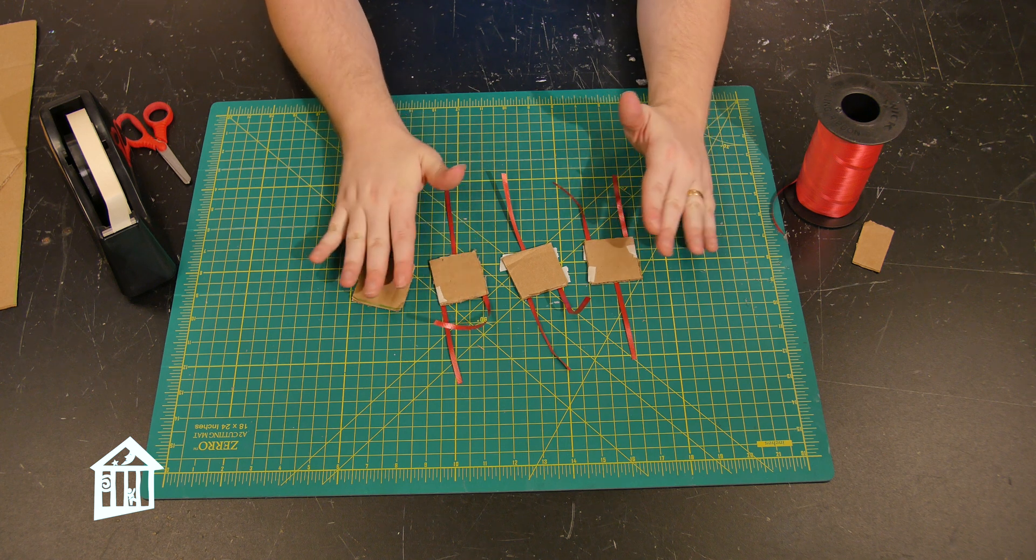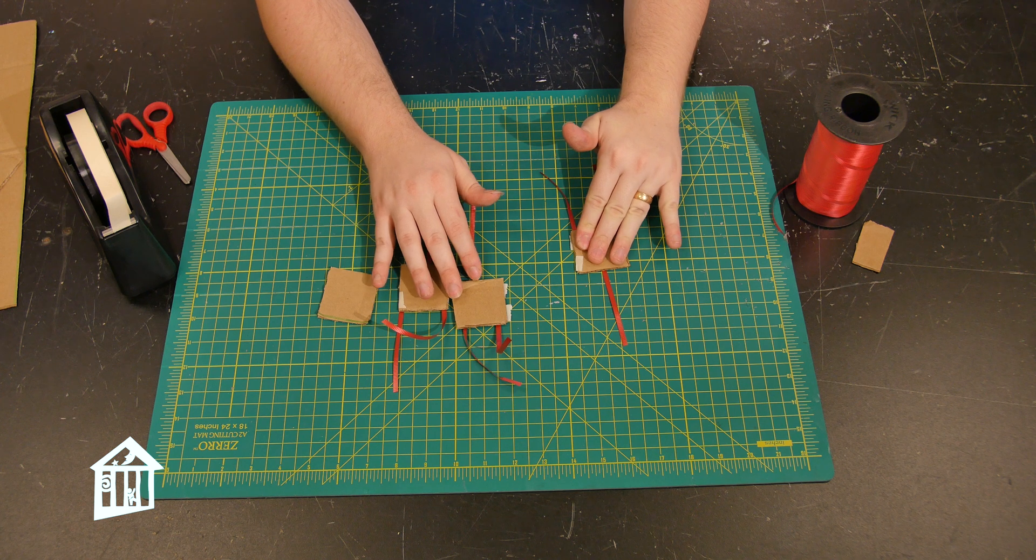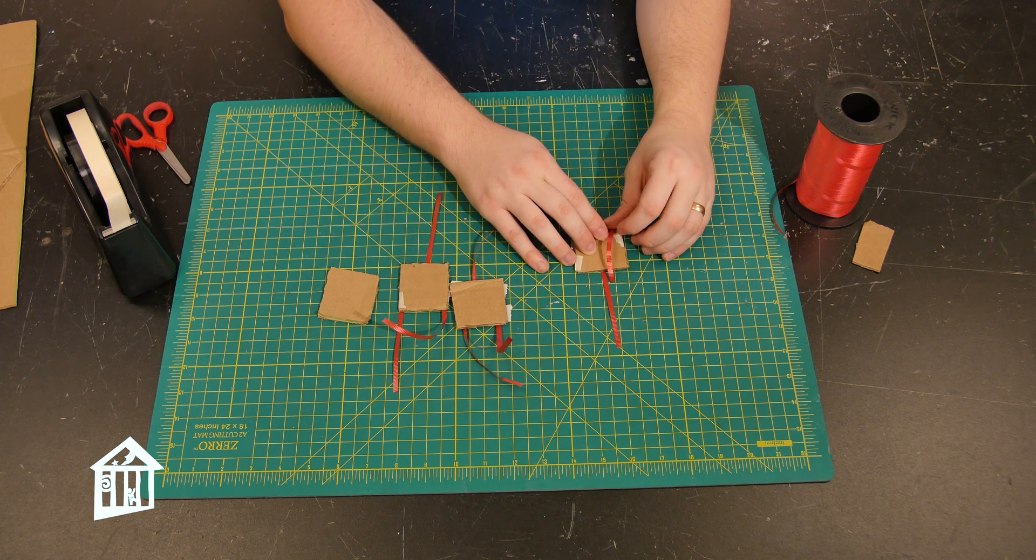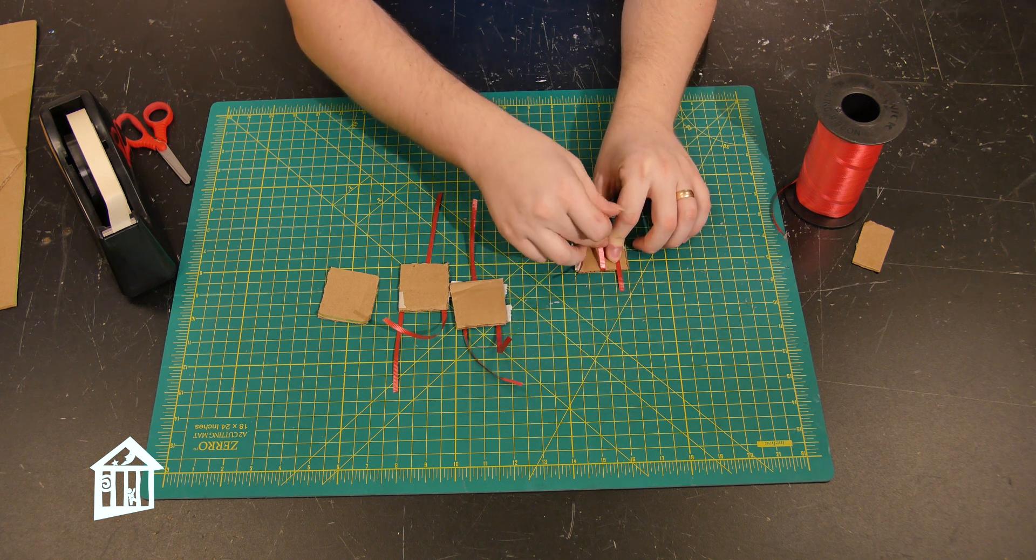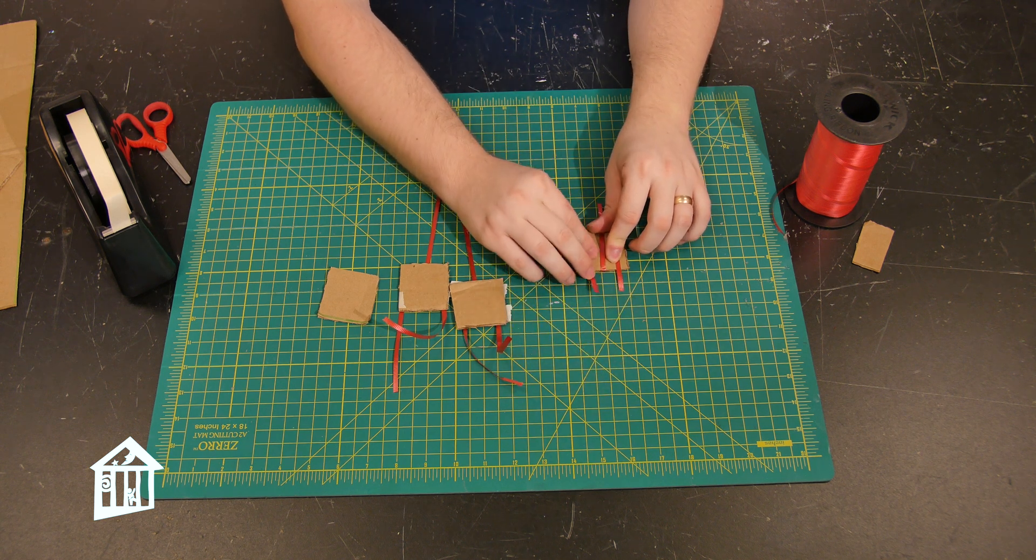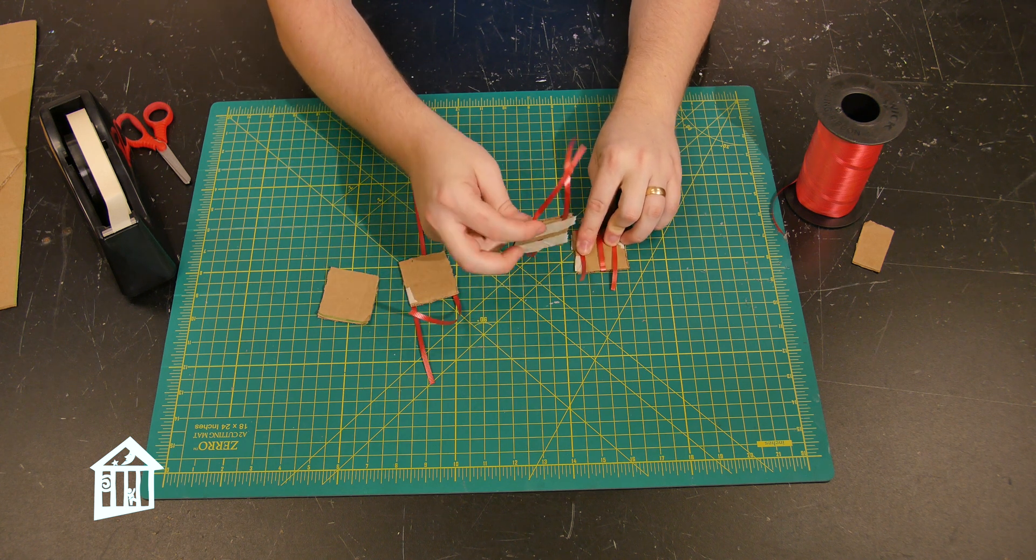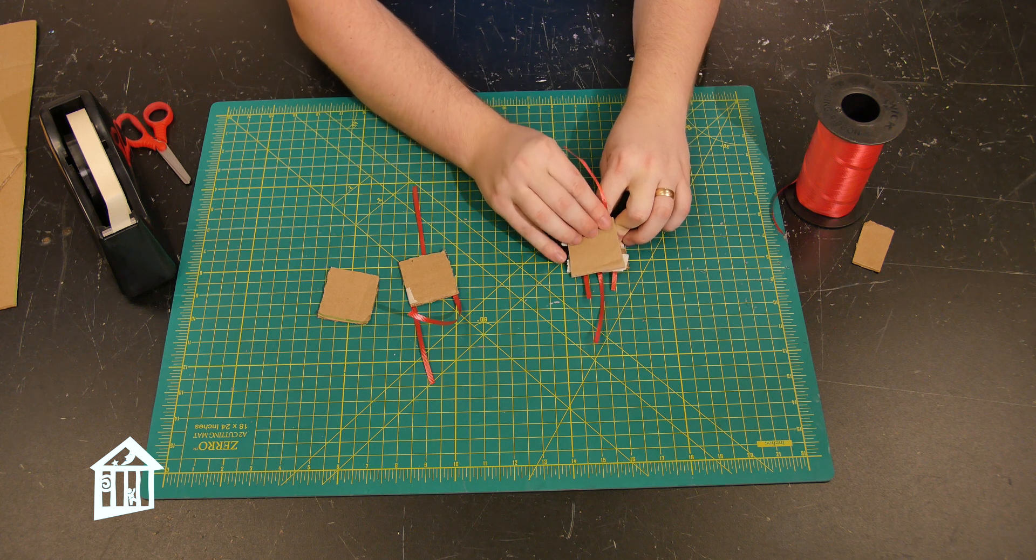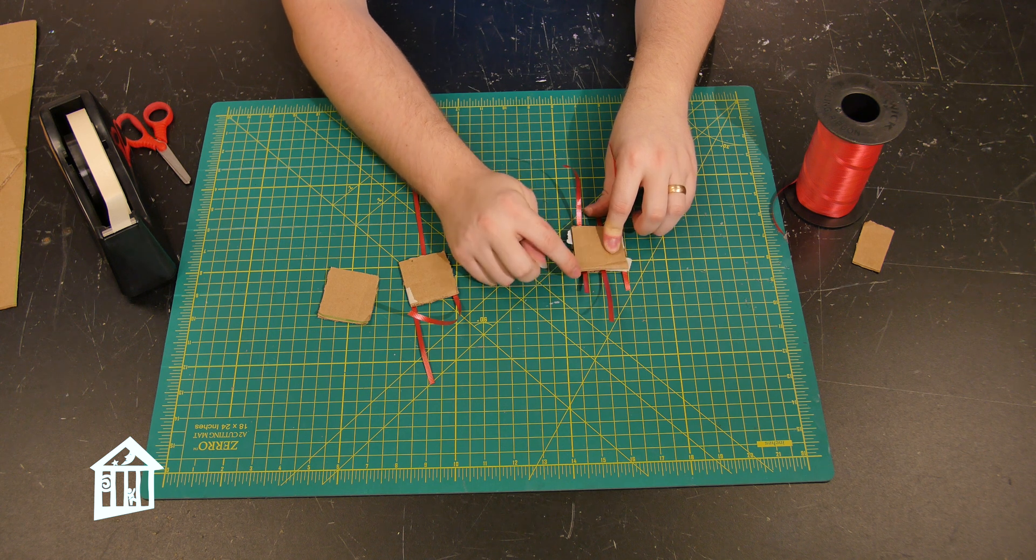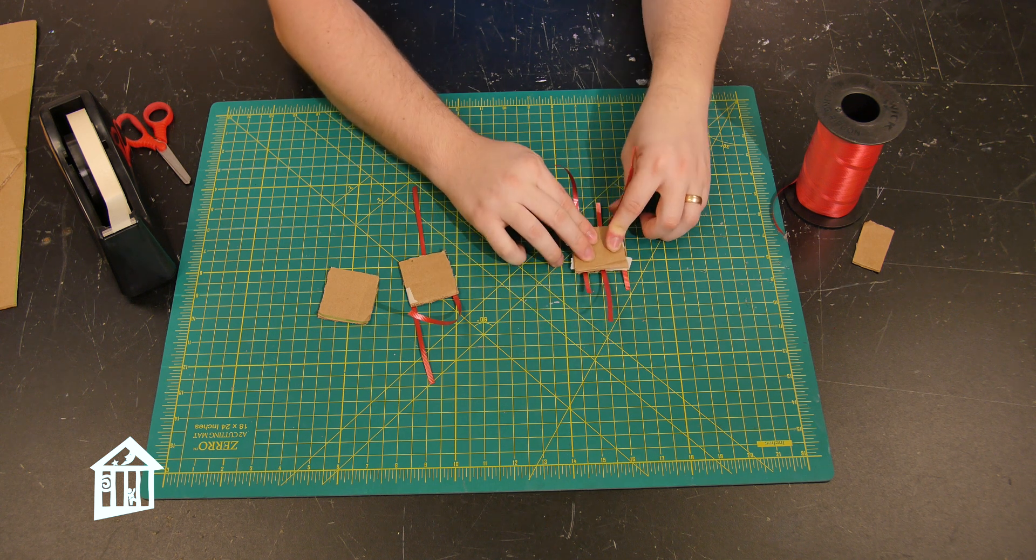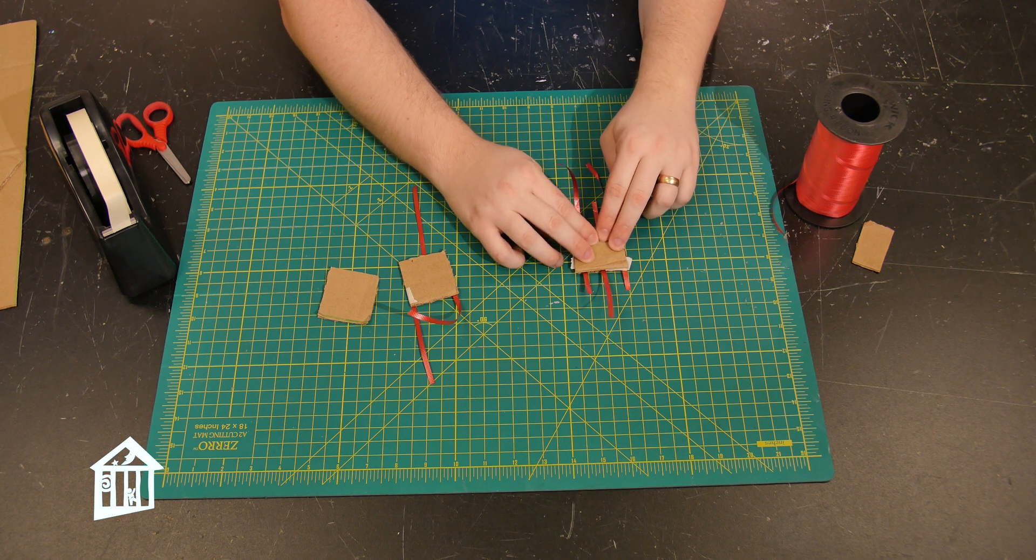So now that you have your ribbons all taped to your squares, you're going to take one of your squares and lay it face down so that the ribbon side is down. And then what you're going to do is you're going to fold the ribbons over like this, all three of them over so that they kind of are going the opposite way. And then you're going to take one of your squares. And what you want to do is you want to lay it down so that whichever direction has the two ribbons now, you want the one with the one ribbon on that side.